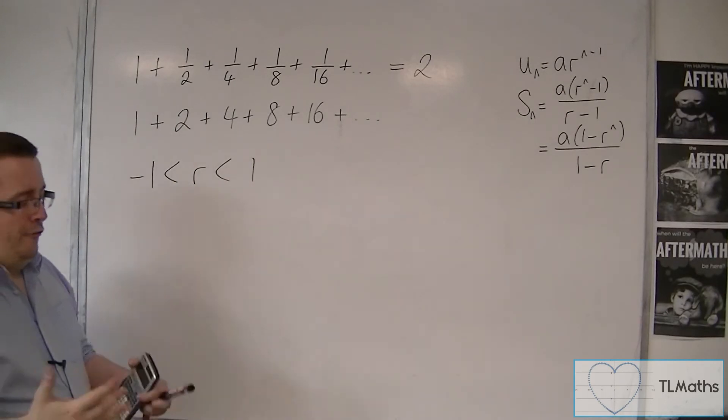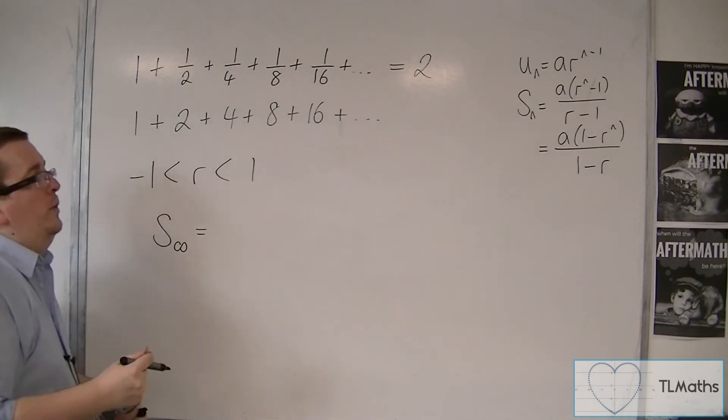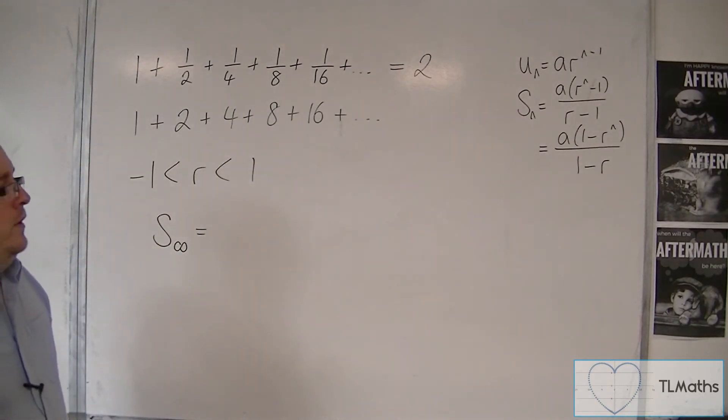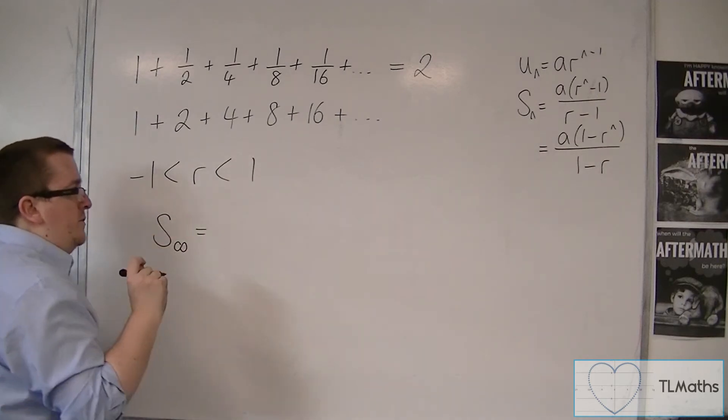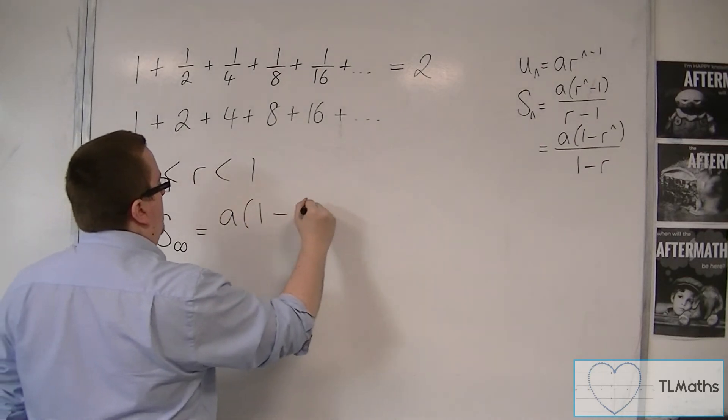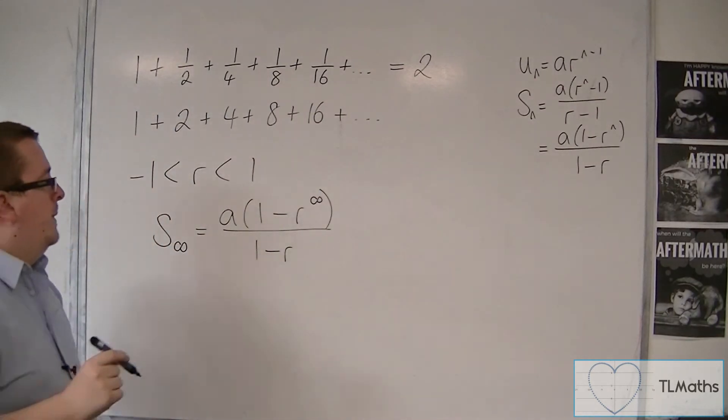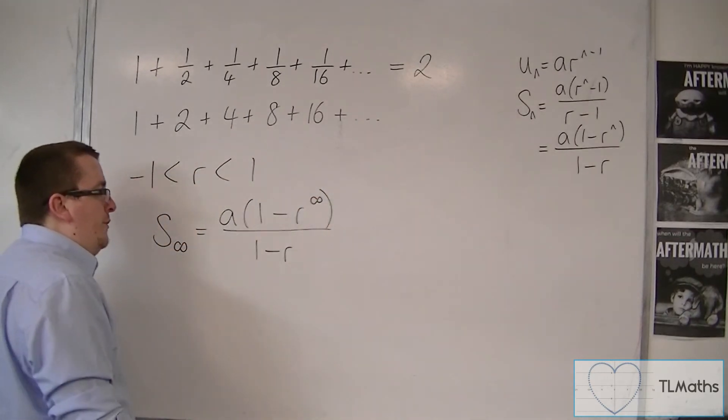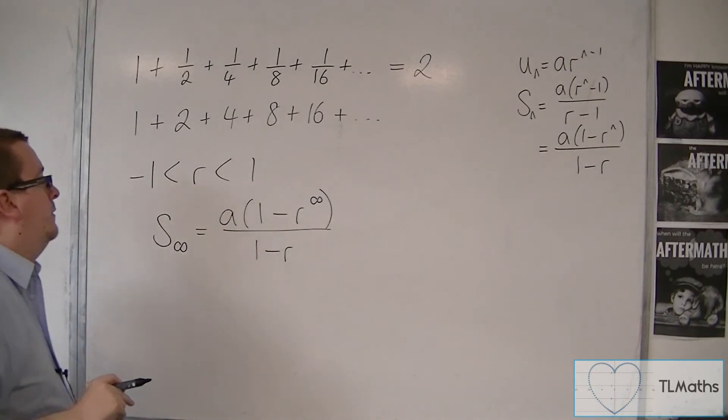So how do we get a formula for the sum to infinity? Well, it makes sense that we would work with one of these formulas for Sn. So what we're going to do is we're going to work with... I'm going to do something really, really bad here mathematically. I am going to take it back, so don't worry. I've actually substituted n for infinity here. What's going to happen is that this bit here, this r to the power of infinity, is going to disappear. And I'm going to show you how that disappears.